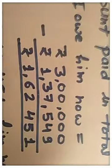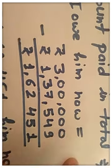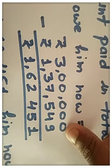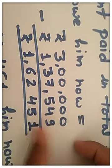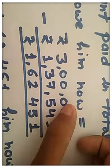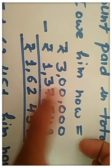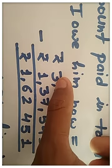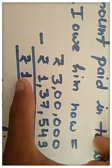If you subtract, after taking carry from this 3, all the 0 becomes 9 and this 0 becomes 10. Now, 10 minus 9 is 1. 9 minus 4 is 5. 9 minus 5 is 4. 9 minus 7 is 2. 9 minus 3 is 6. And, this 3 becomes 2. 2 minus 1 is 1.